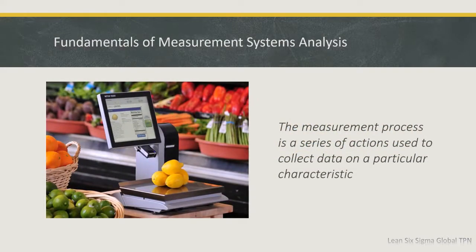Both the store and its customers must be able to trust the weights on the scale. So the store defines a specific method for weighing procedures for produce. This measurement process is a series of actions used to collect data on particular characteristics. For the grocer, this may mean that the cashier wipes the scales clean, places the items on the scale, waits until the scale reading stops changing, and then presses a button to transmit the scale results to the cashier register.